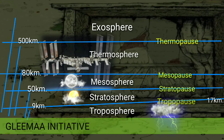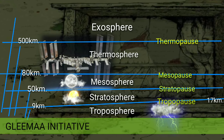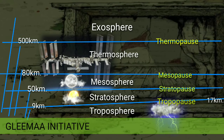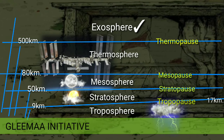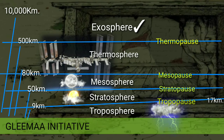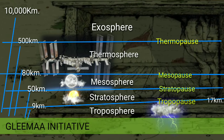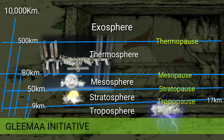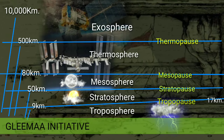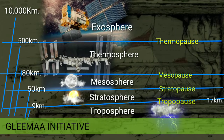Last but not the least, coming to the outermost layer of the Earth's atmosphere, that is exosphere. It extends from an altitude of about 700 kilometers to 10,000 kilometers. After that, it merges into the solar wind. The exosphere contains most of the satellites orbiting Earth.